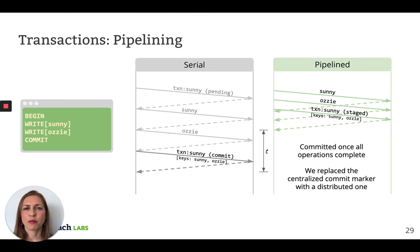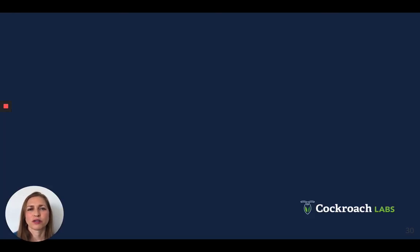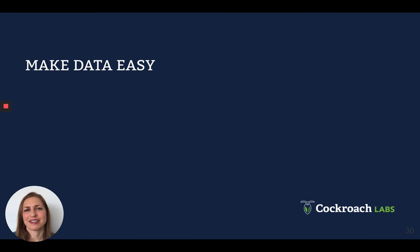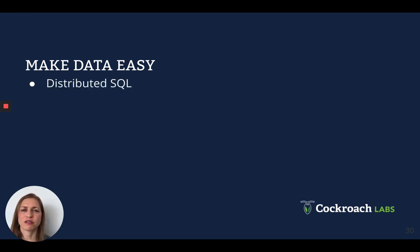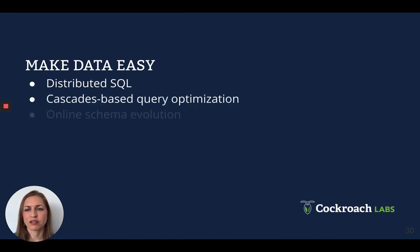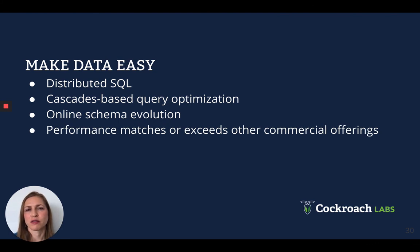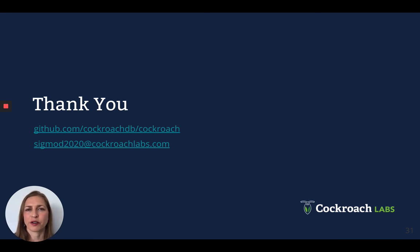We see this performance improvement in practice as well — I encourage you to check out the paper where we have a number of performance results. In addition to supporting geo-distributed workloads with good performance and strong consistency, we wanted CockroachDB to be easy to use. Make data easy is actually our company motto, and for that reason we decided to add support for the Postgres dialect of SQL. The paper describes how we support scale-out distributed SQL, cascades-based query optimization, and online schema evolution. The paper also has an extensive performance evaluation, which shows that the performance of CockroachDB matches or exceeds that of other commercial offerings on industry-standard benchmarks. As a final note, CockroachDB is open source and we welcome contributions — we're continually improving the system and we'd love your help.